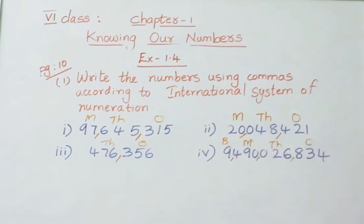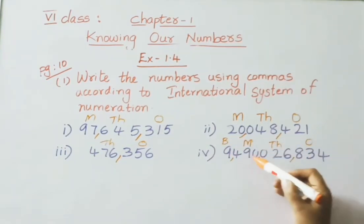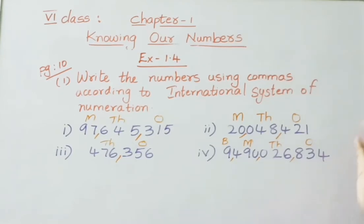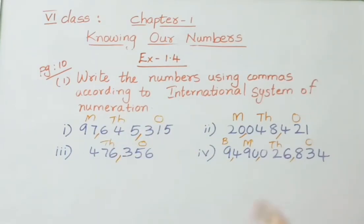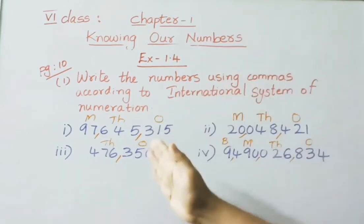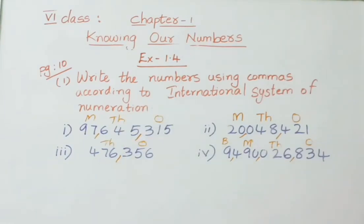Reading the next number: 9 billion 490 million 26 thousand 834. Whenever a number is given and we are asked to write it in the International system, from right to left we separate three digits at a time using commas. The first three digits come under the ones period, the next three under thousands, the next three under millions, and the next three under billions. Then we can easily read, write, and expand the number.